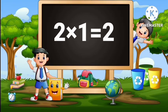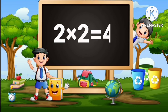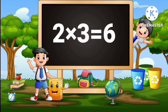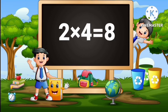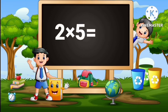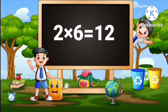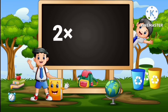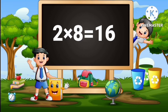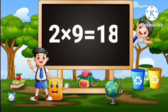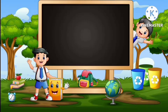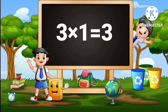2 ones are 2, 2 twos are 4, 2 threes are 6, 2 fours are 8, 2 fives are 10, 2 sixes are 12, 2 sevens are 14, 2 eights are 16, 2 nines are 18, 2 tens are 20. 3 ones are 3.